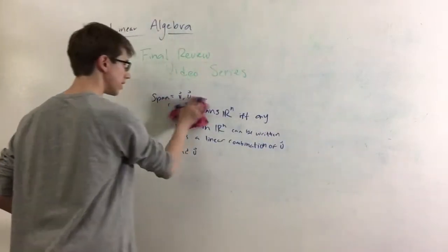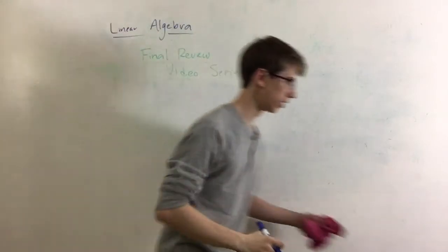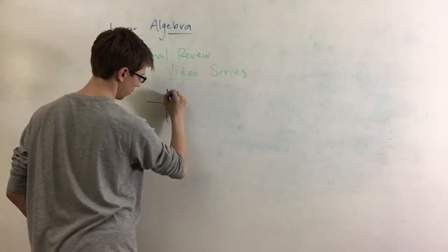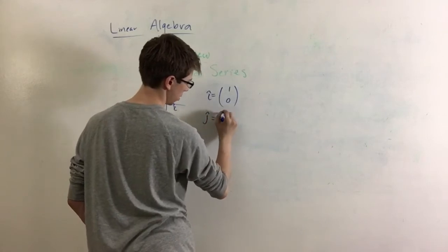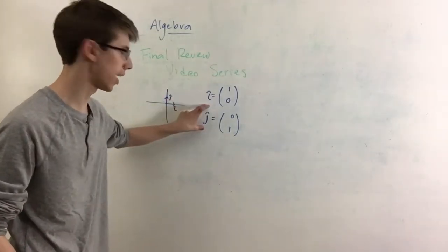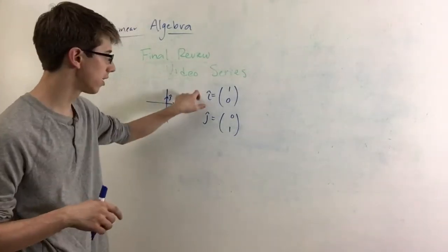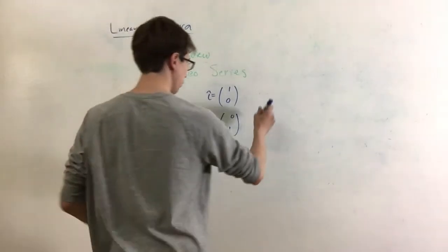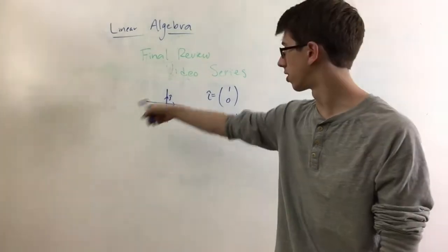Let's take our two basis vectors, i-hat and j-hat. They're the basis vectors for your two-dimensional space — the coordinate plane. i-hat is represented as [1, 0] and j-hat as [0, 1]. How do we know that i-hat and j-hat span R-squared? Any linear combination between these two vectors is going to give you any vector in the space. When you have a vector in two-dimensional space, you can write it as a times i-hat plus b times j-hat, where [a, b] is the vector.